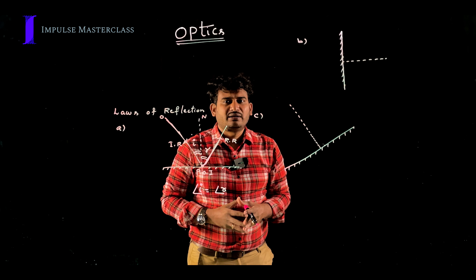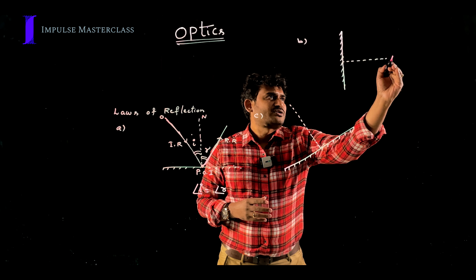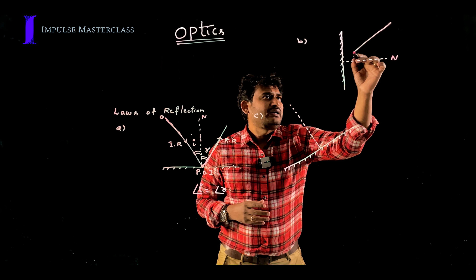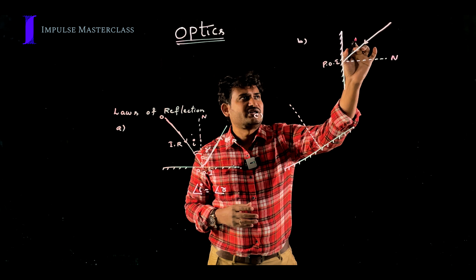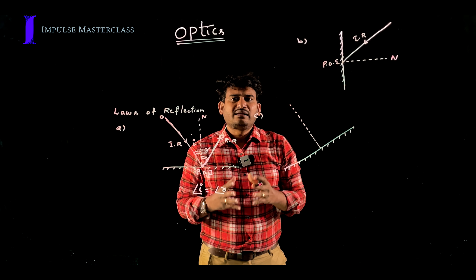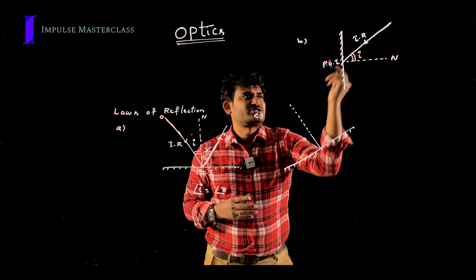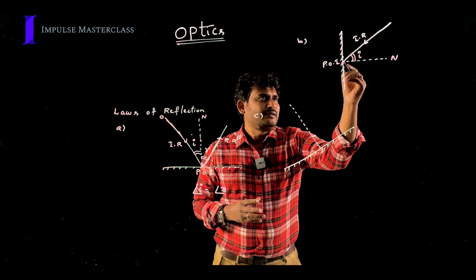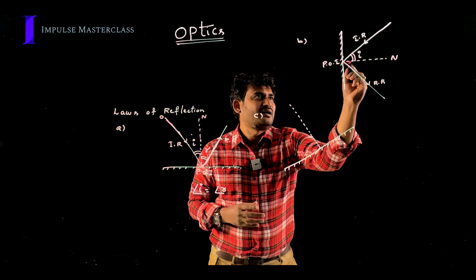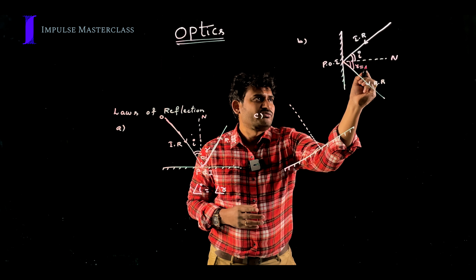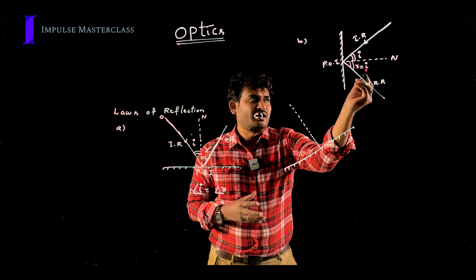Similarly, for the second mirror which is along vertical, the normal should be along horizontal. A light ray is incident at the point of incidence. The angle between the incident ray and the normal is called the angle of incidence i. The light ray then reflects back, and the angle between the reflected ray and the normal is called the angle of reflection. According to the laws of reflection, angle of incidence equals angle of reflection.